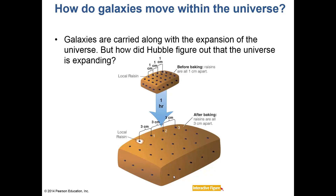How do galaxies move within the universe? In 1929, astronomer Edwin Hubble — born in Marshfield, Missouri, just 25 miles up I-44 from Springfield — discovered that the universe was expanding. This is Hubble's law of the expanding universe. Think of it like a loaf of raisin bread: as the bread bakes and expands, all the raisins — the galaxies — expand away from each other.